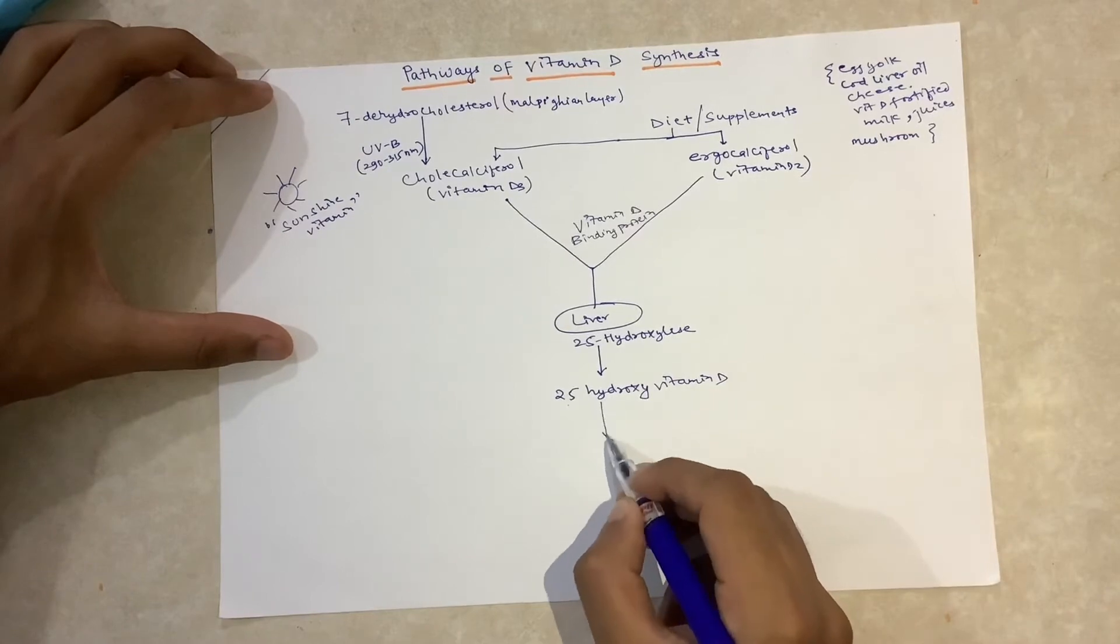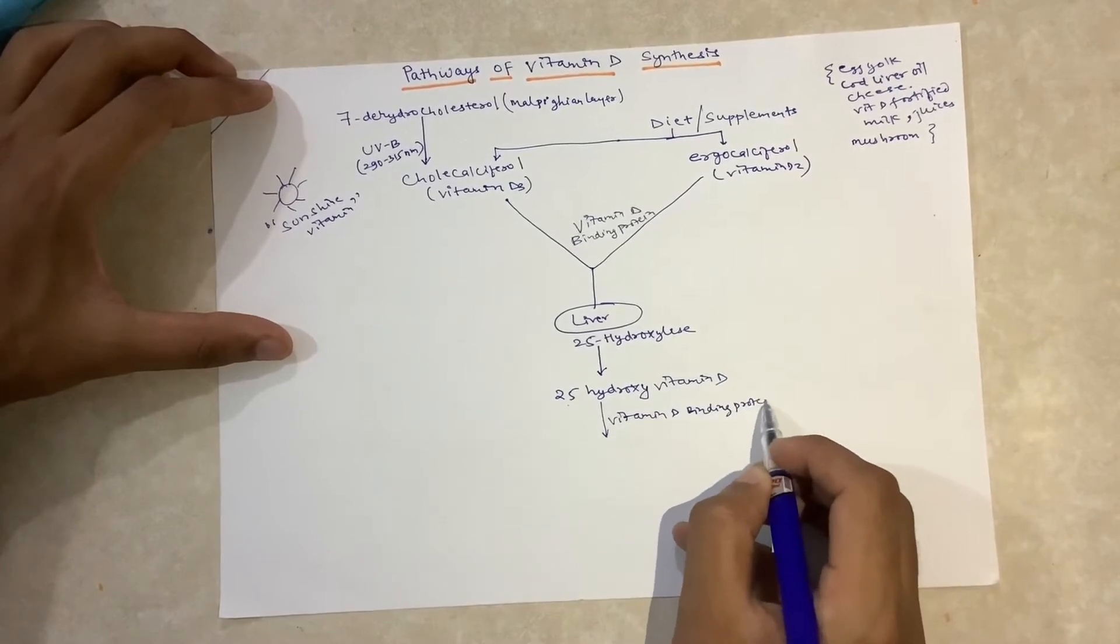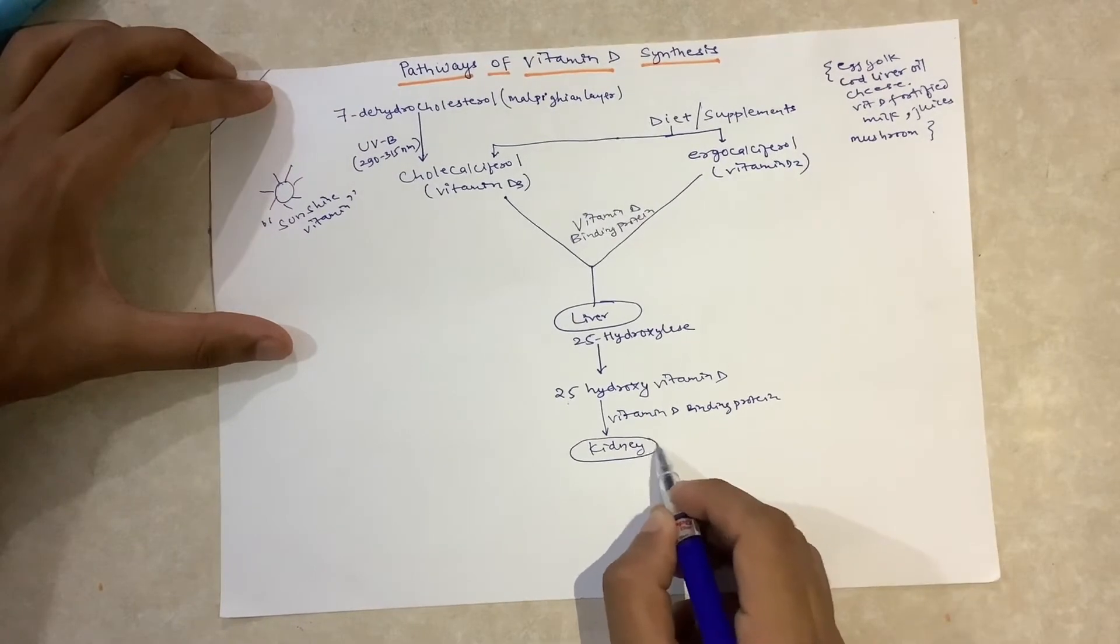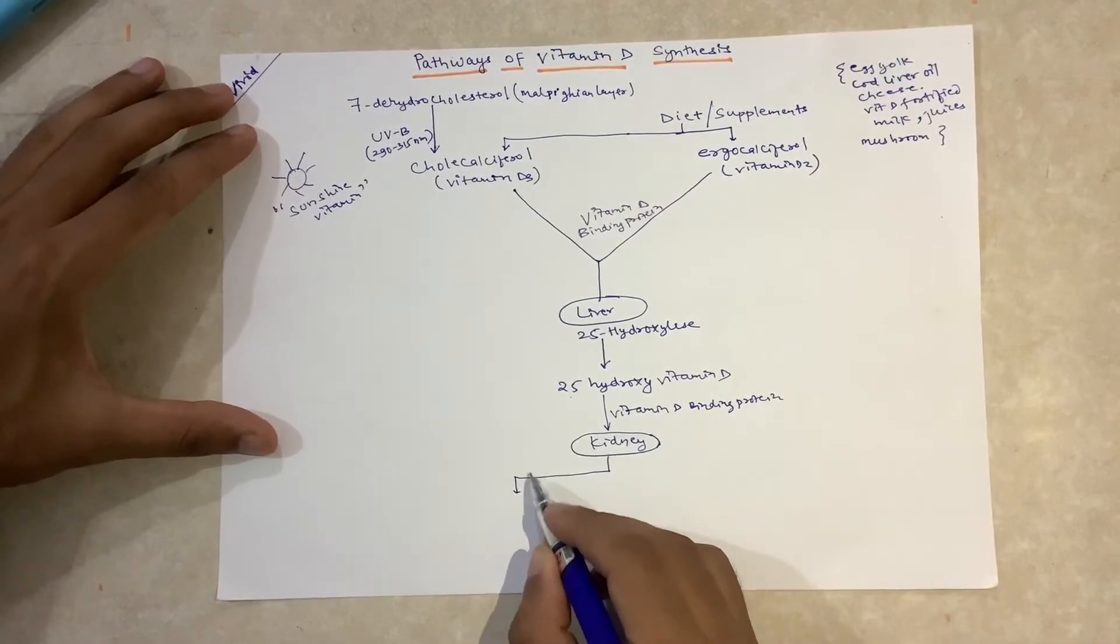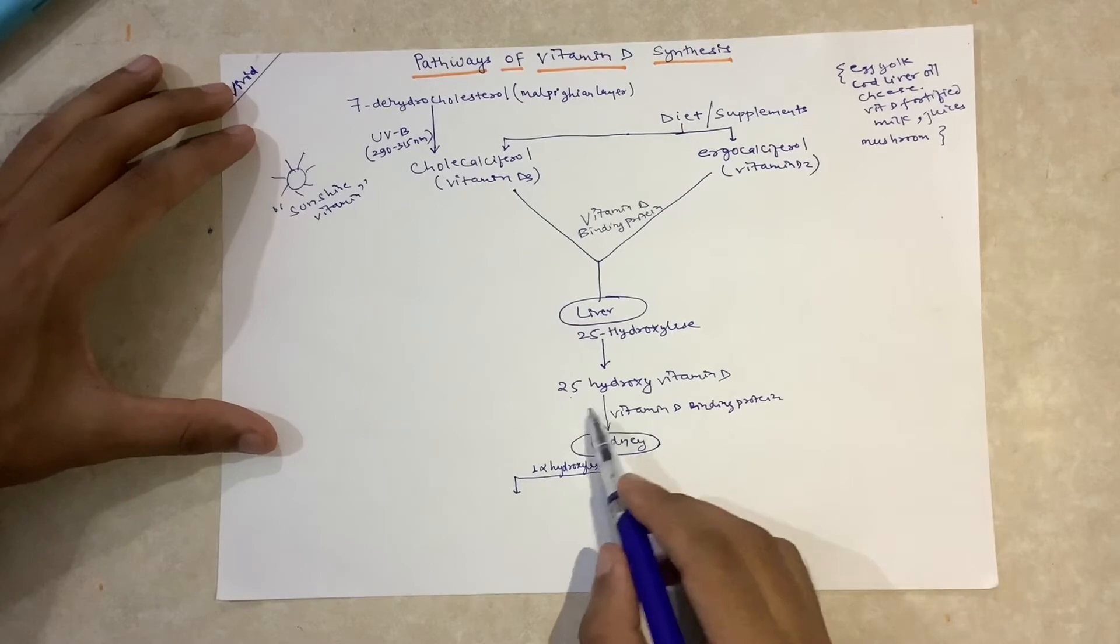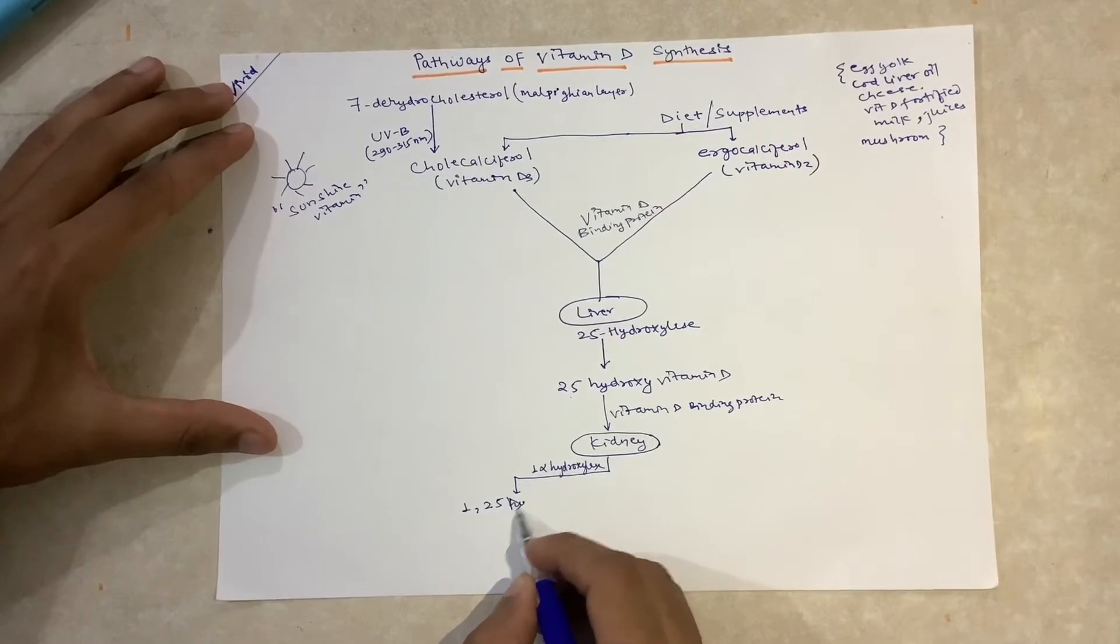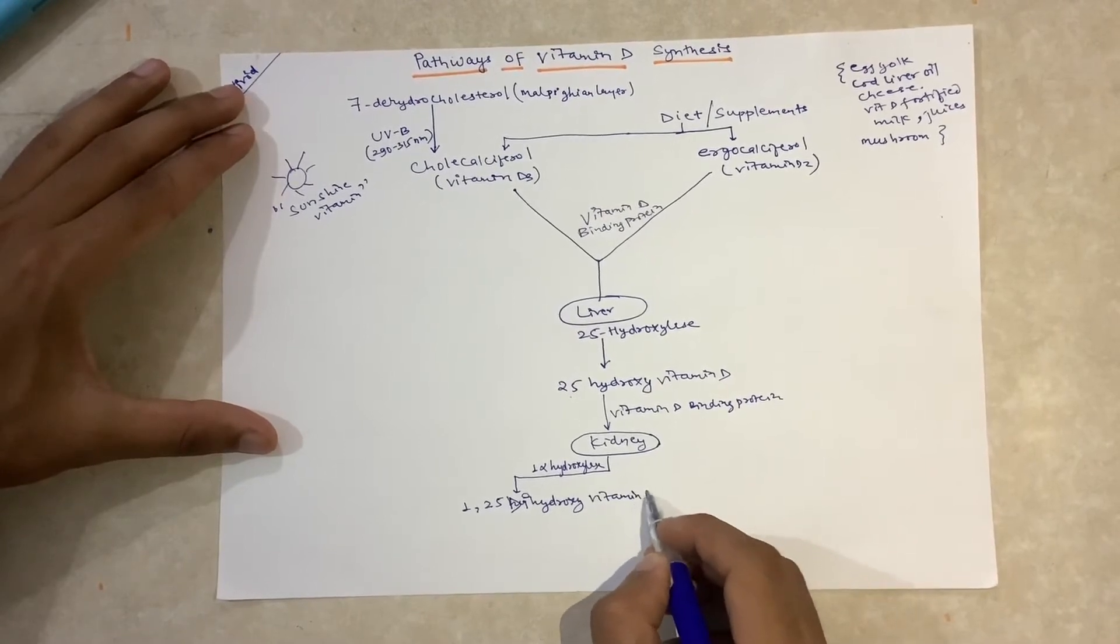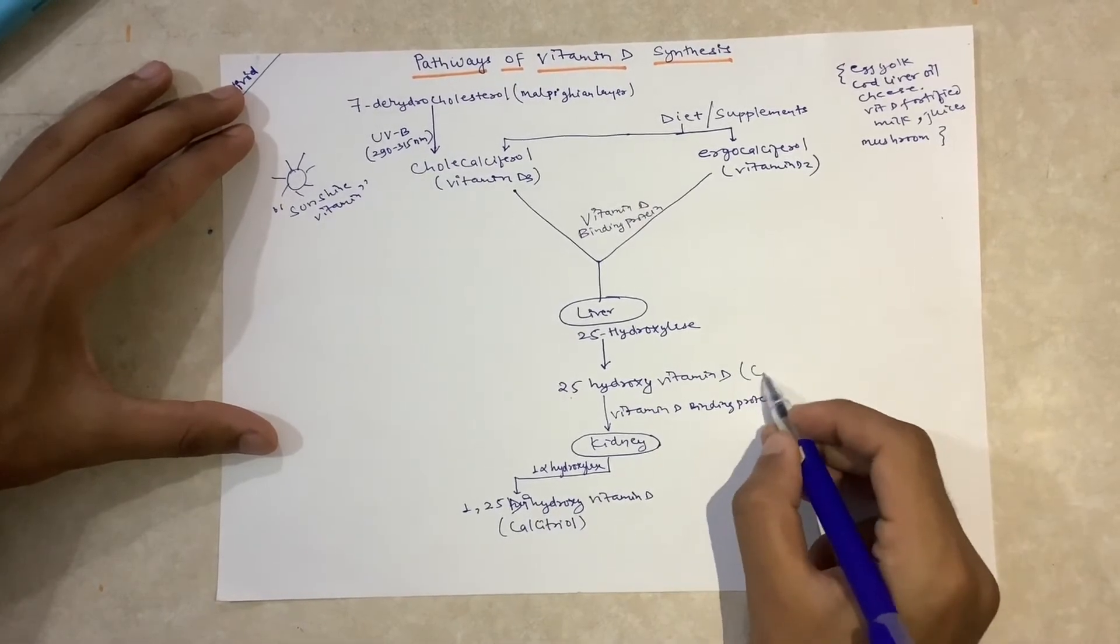It is again transported using vitamin D binding protein and gets transported to the kidney. In the kidney, in the region of the PCT, there is an enzyme known as 1-alpha-hydroxylase, which converts 25-hydroxy vitamin D to 1,25-dihydroxy vitamin D. This is known as calcitriol, and the previous form is known as calcidiol.